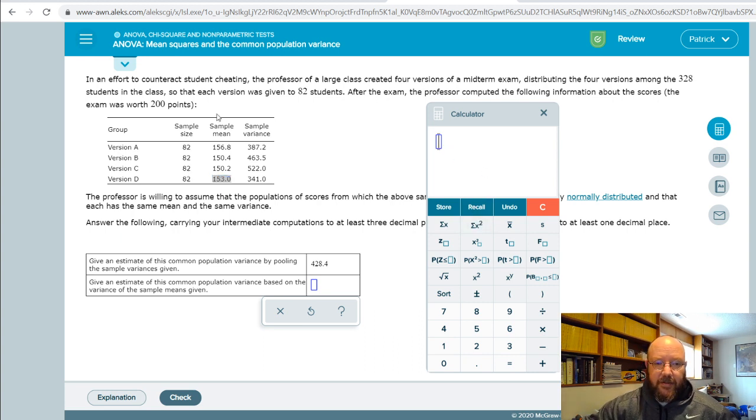Starting with 156.8... oops, typed it in right, .8, and then hit comma. Do the next one, 150.4, comma. Take the next one, 150.2, comma, and the last one, 153. Don't hit enter, because now we have this button right here which is sample standard deviation, which would have made life a lot easier in earlier ALEKS problems, but here it is now. Just hit s and that gives us our sample standard deviation amongst these means.